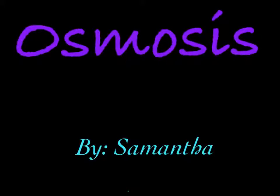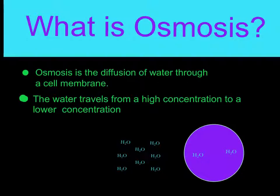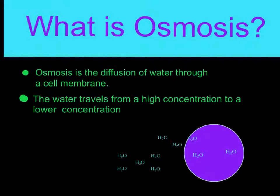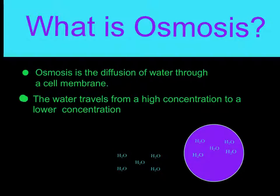Osmosis by Samantha. What is osmosis? Osmosis is the diffusion of water through a cell membrane. The water travels from a high concentration to a lower concentration, like in this diagram. The water outside of the cell travels inside of the cell through the process of osmosis, so that the cell works properly.